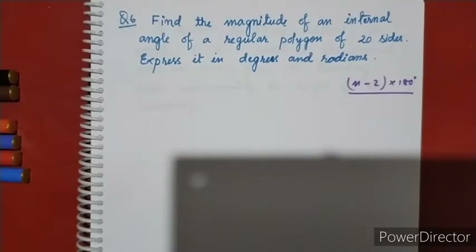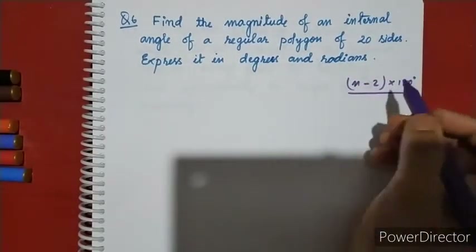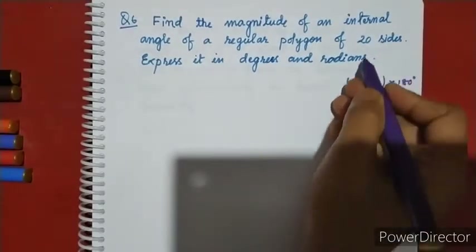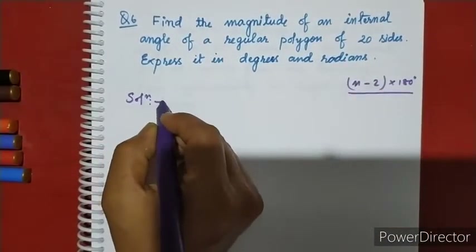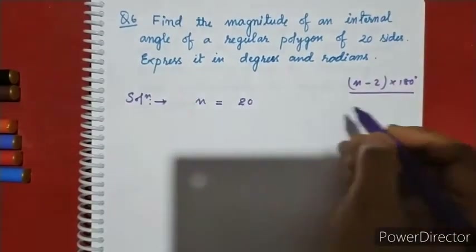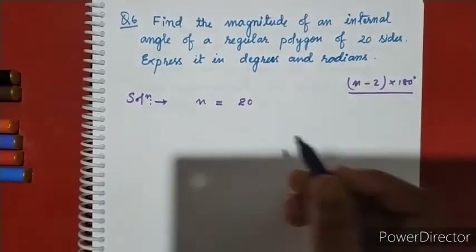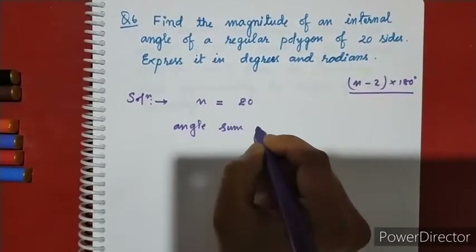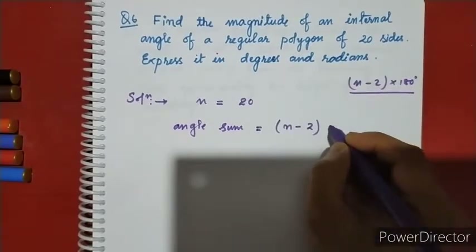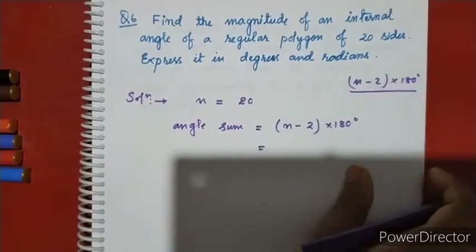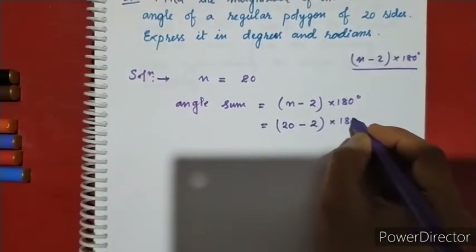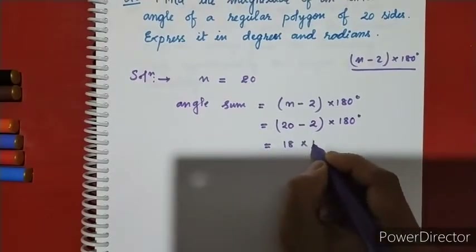The number of sides is n. Here n equals 20. The angle sum formula is (n minus 2) into 180 degrees. So (20 minus 2) into 180, which is 18 into 180 degrees.